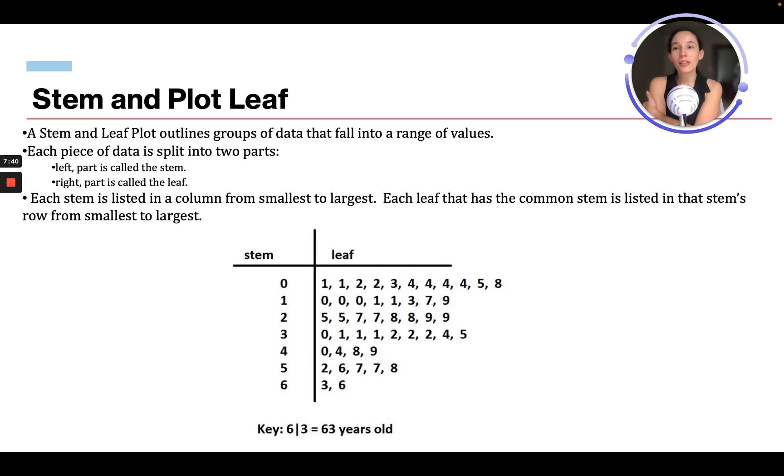A stem and leaf plot outlines a group of data that falls into a range of values. Each piece of data is split into two parts: a leaf and a stem. The left part is called the stem and the right part is called the leaf. Each stem is listed in a column from smallest to largest. And each leaf that has the common stem is listed in that stem's row from smallest to largest.